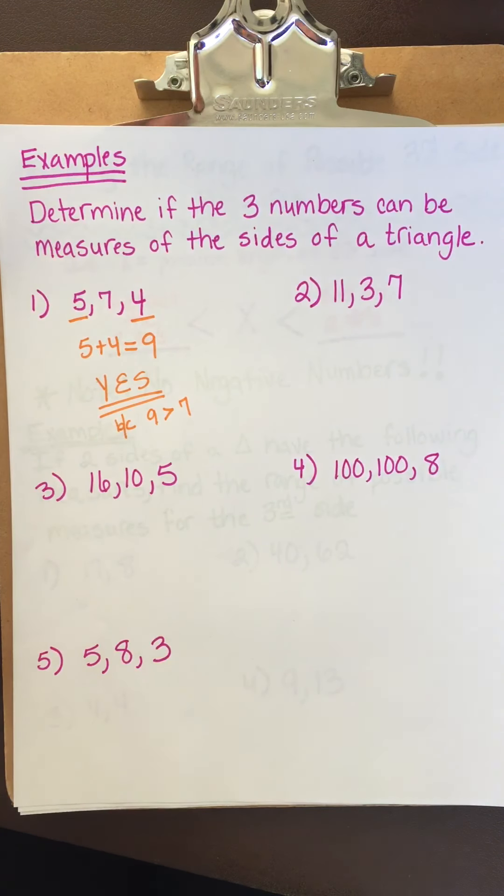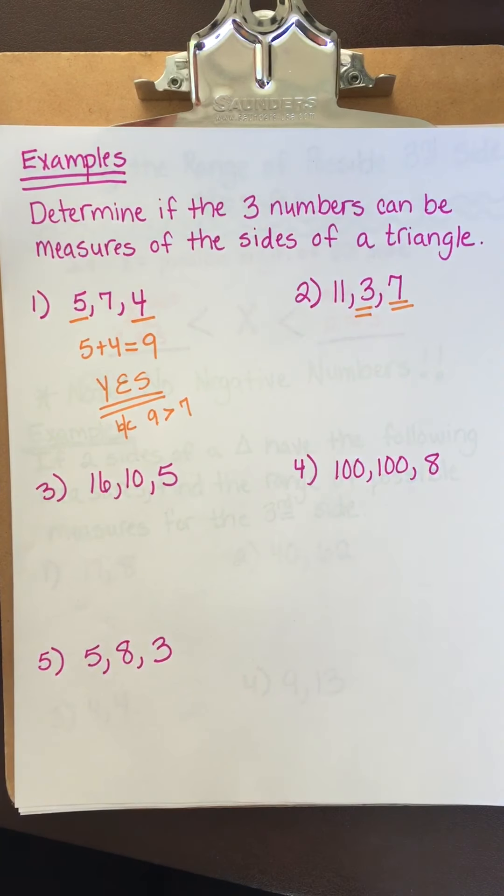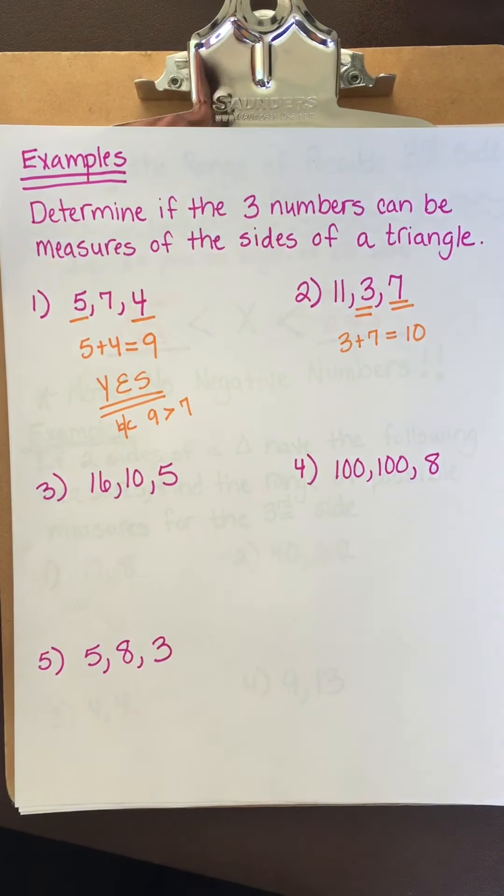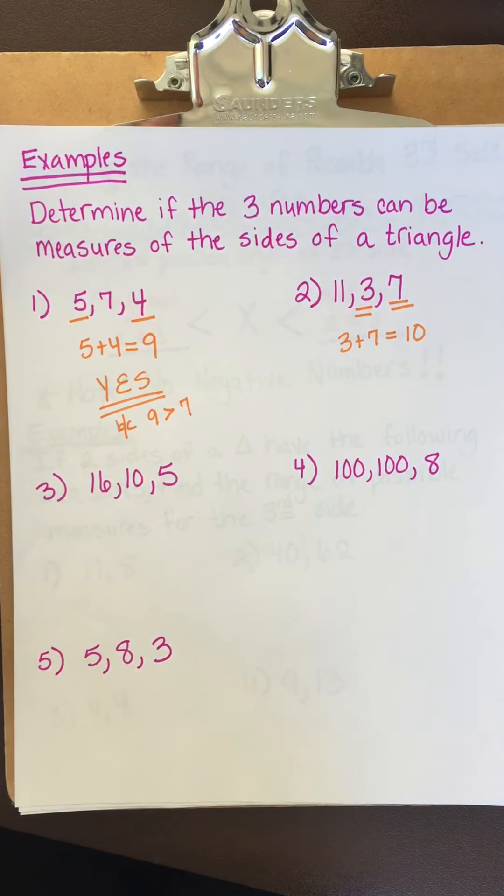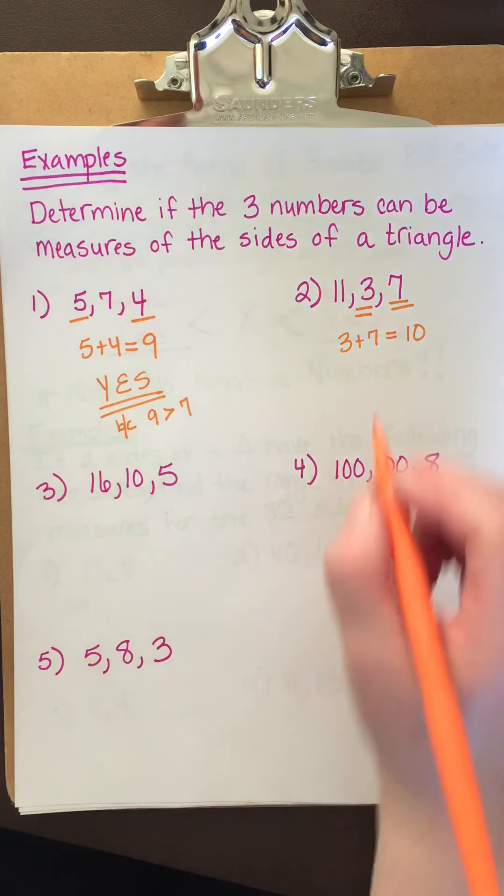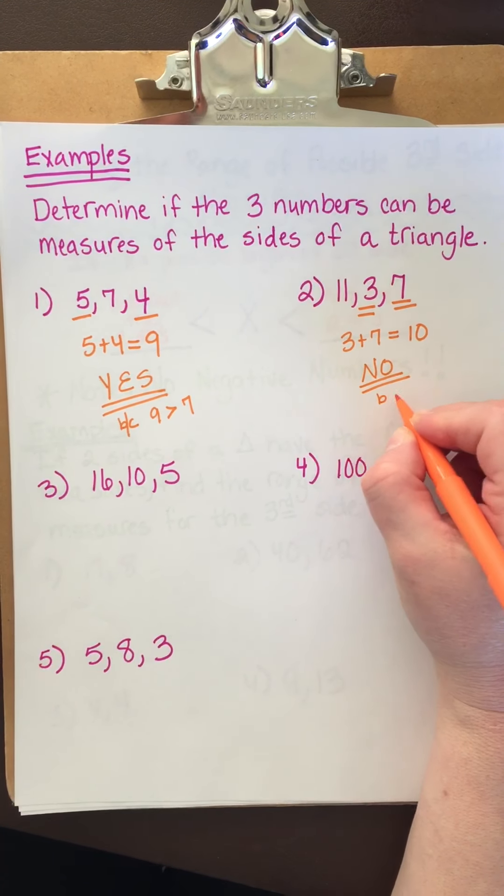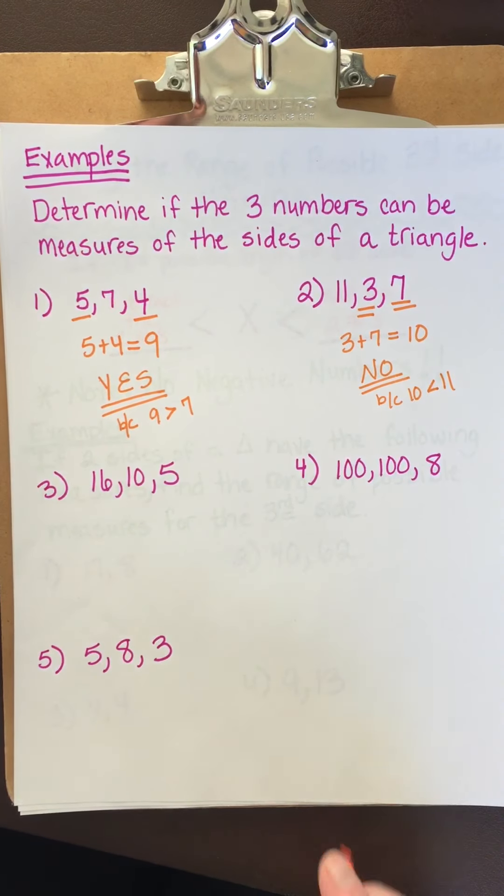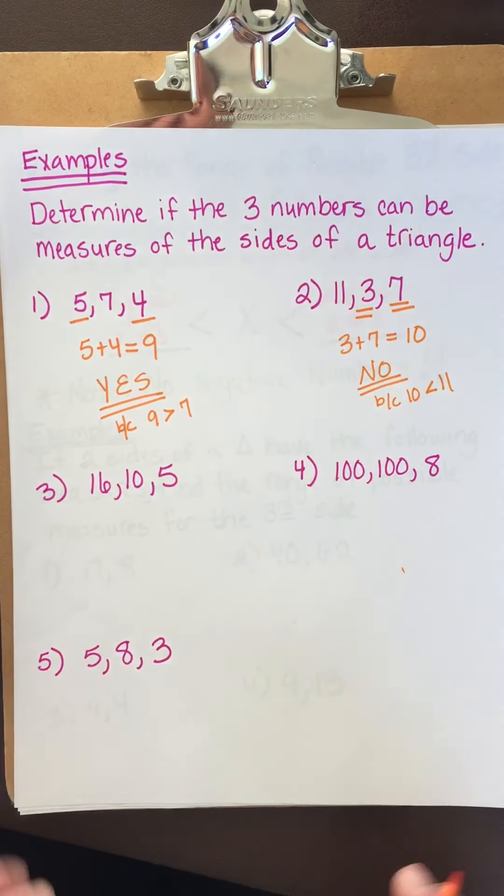All right. Let's look at number two. What are the two smallest numbers? 3 and 7. Add those bad boys up. 3 plus 7 equals 10. Then you ask yourselves, is 10 bigger than 11? No. 10 is not bigger than 11. So no. This cannot be a triangle because 10 is less than 11. It ain't happening. Those two little sides wouldn't be able to reach each other and they wouldn't meet.